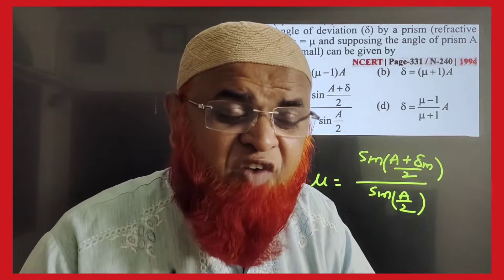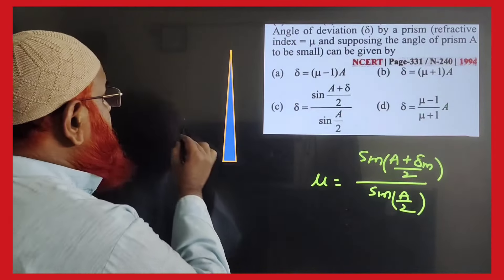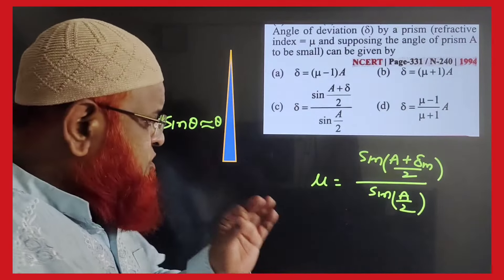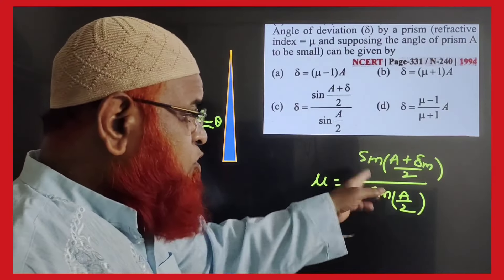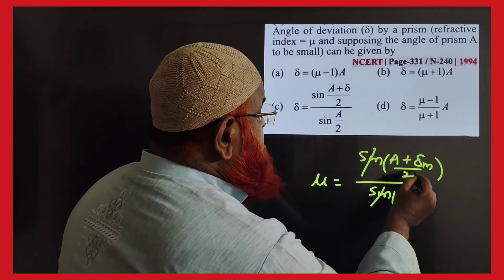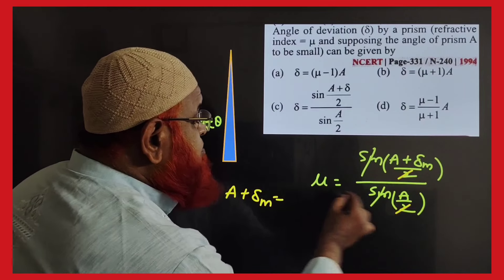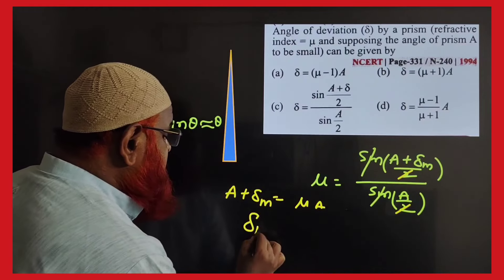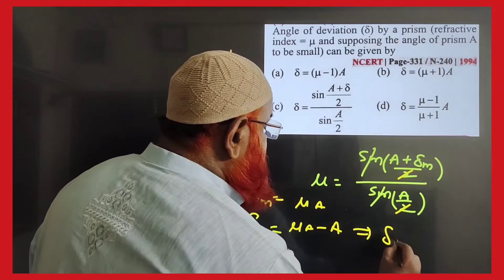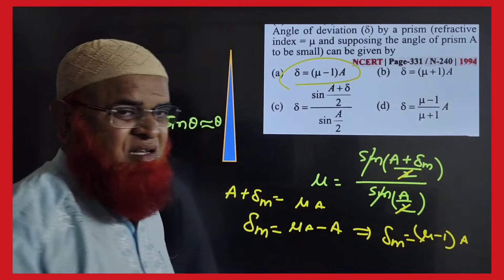For a thin prism, since angles are small, sin(theta) ≈ theta. Applying this approximation to the minimum deviation formula, the sin terms drop and the 2s cancel. This gives: A + delta_m = mu × A, so delta_m = (mu − 1) × A. This is the standard thin prism deviation formula.